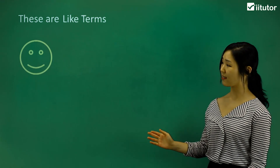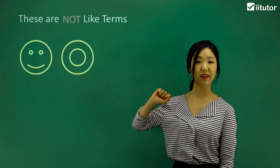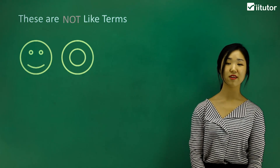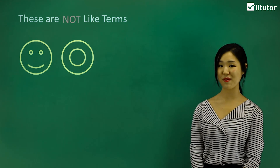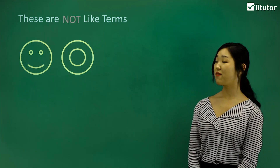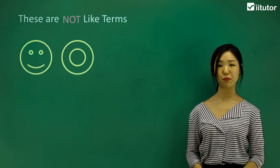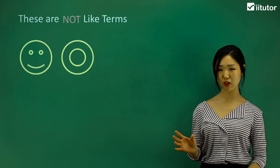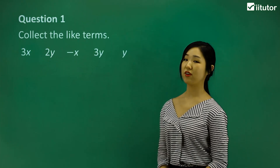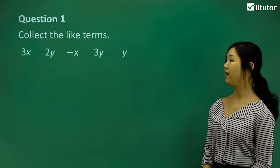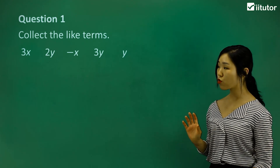Now have a look at this one — we've got a circular face and a little donut. They are not like terms because they do not look alike. If they don't look the same, they're not like terms. The whole point of this section is to gather your like terms together and simplify them. So let's start with a quick question: collect the like terms from a given list.